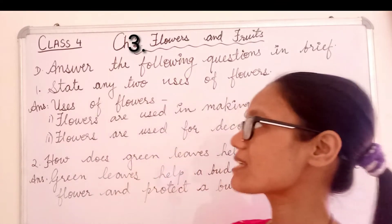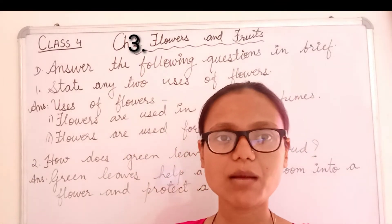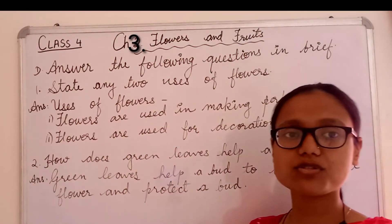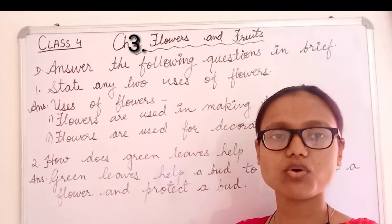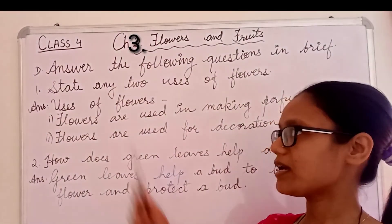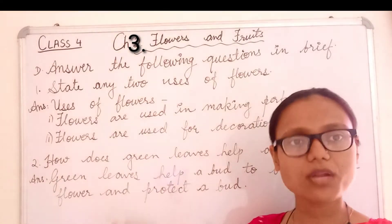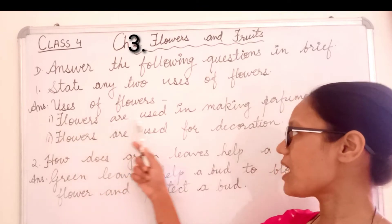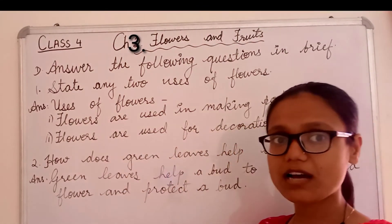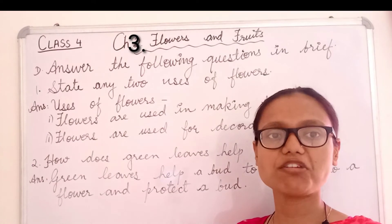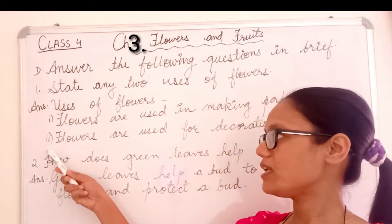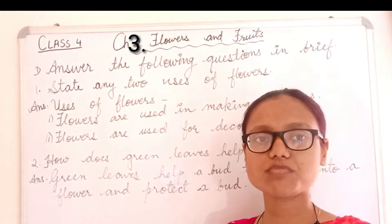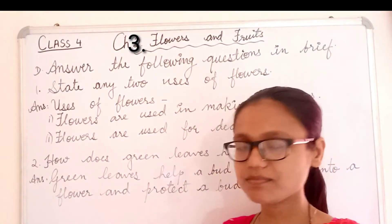Question D, answer the following questions in brief. Number one: state any two uses of flowers. Following are the uses of flowers. First, flowers are used in making perfumes — flowers are used to make perfume and scent. Second, flowers are used for decoration purposes.